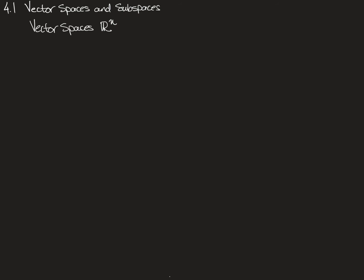A Euclidean space, on the other hand, is the collection of all possible things in a particular dimension. In R2, which we can call Cartesian space, there's the point (0,0), (0,1), (0,2), (0,-1), and obviously there are an infinite number of those. Then there's (0,1), (1,2), (1,-1), and there's an infinite number of those as well — an infinite number of elements in this collection.